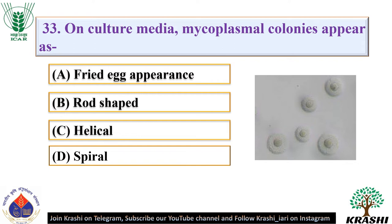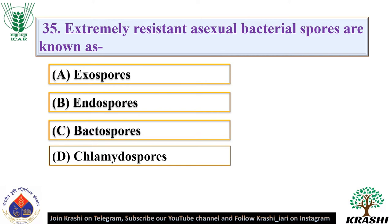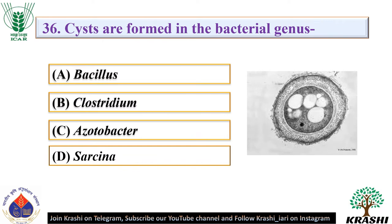Question number 33: On culture media, mycoplasmal colonies appear as — they appear as fried egg appearance. Question number 34: An example of sulfur bacteria is. The correct answer is option C — Thiobacillus thiooxidans. Question number 35: Extremely resistant asexual bacterial spores are known as. The correct answer is option B — endospores. Question number 36: Cysts are formed in the bacterial genus. The correct answer is option C — Azotobacter. Cysts are dormant cells resistant to deleterious conditions.